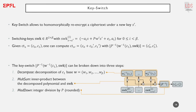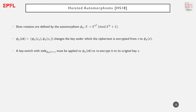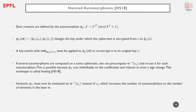Homomorphic rotations are defined by an automorphism phi. The particularity of this operation is that it also applies phi to the key under which the ciphertext is encrypted, and must therefore be followed by a key switch to re-encrypt the ciphertext under its original key. If several rotations need to be computed on the same ciphertext, we can pre-compute the first step of the key switch — the integer basis decomposition — and reuse it for each different rotation. This technique, proposed by Halevi and Shoup, is called hoisting.